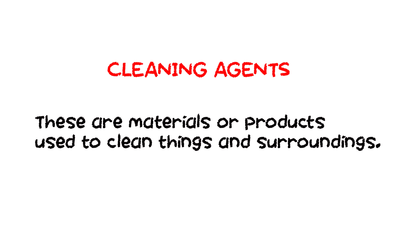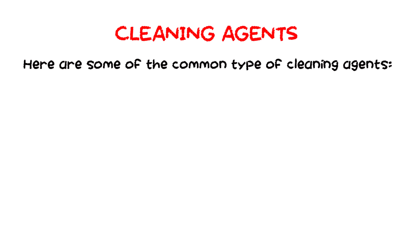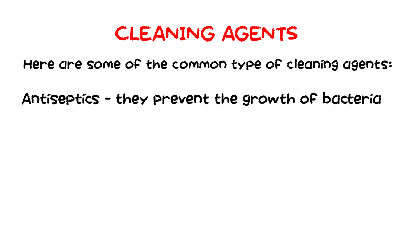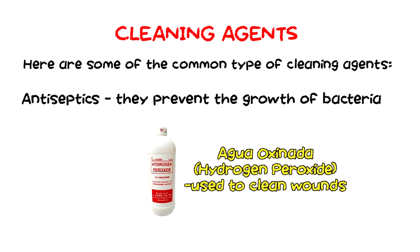Another type of material found in the environment are the cleaning agents. These are materials or products used to clean things and the surroundings. Here are some of the common types of cleaning agents. Antiseptics — they prevent the growth of bacteria. An example is agua oxenada or hydrogen peroxide. They are used to clean wounds.